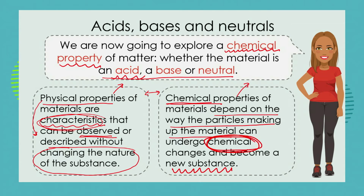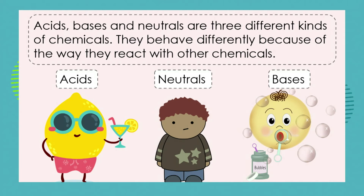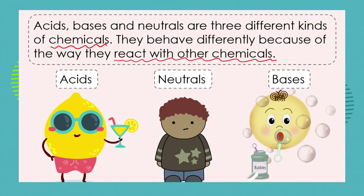The chemical property we're focusing on right now is: is the substance an acid, a base, or neutral? When we looked at physical properties, we said something could be a solid, a liquid, or a gas. Now we're asking: is this substance an acid, a base, or is it neutral? Acids, bases, and neutrals are three different kinds of chemicals that behave differently — not because of physical properties like flexibility or conductivity, but because of the way they react with other chemicals.